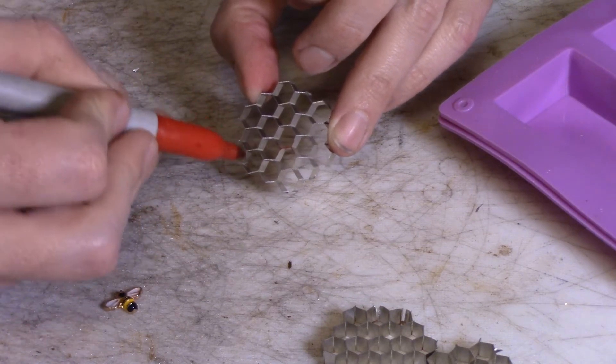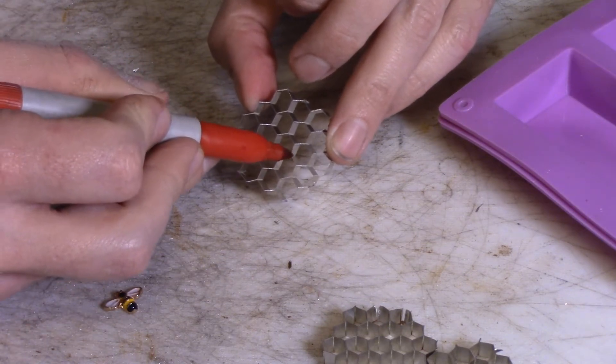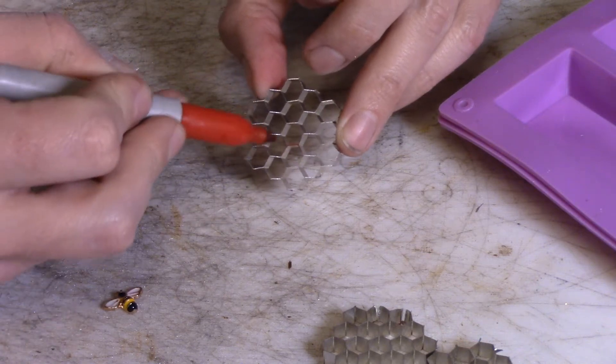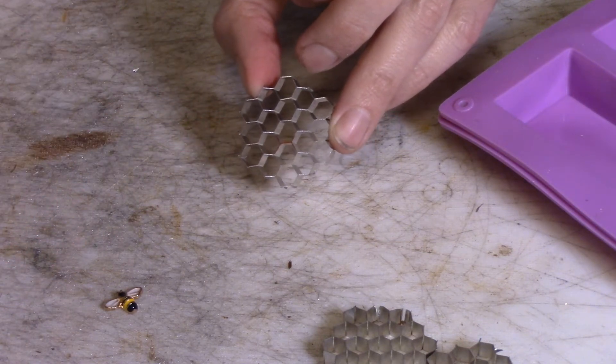I'm just going to take a carbide burr and grind down almost halfway into this aluminum grid.